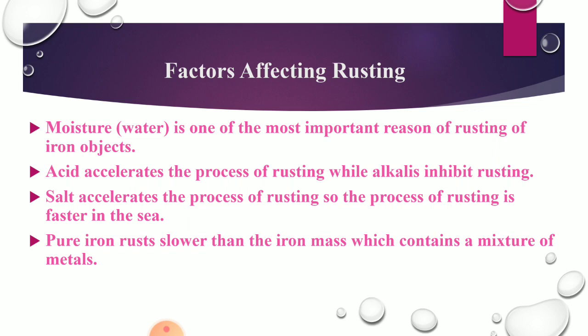The next factor is acid. Acid promotes rusting — when exposed to acid rain, iron gets rusted and it rusts even faster. Alkalies, on the other hand, prevent rusting. Then there is salt — iron tends to rust faster in the sea due to the presence of salt. Another factor is impurities — pure iron rusts slower compared to iron mixed with other metals.